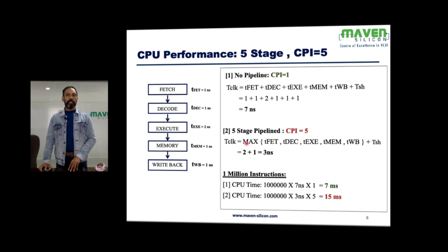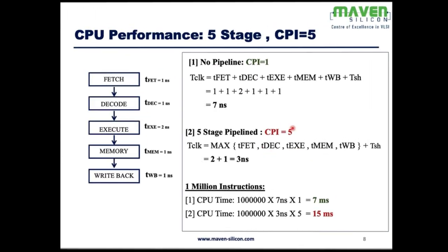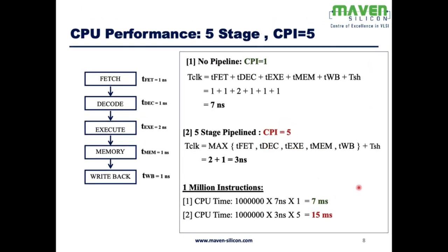For the pipeline, T_clock is the maximum of one stage's delay. The execution stage is maximum at two nanoseconds, plus setup and hold time of one nanosecond, giving three nanoseconds overall. For one million instructions, the no-pipeline processor takes seven milliseconds with CPI of one, but the five-stage pipeline processor takes 15 milliseconds due to CPI of five — which is not good, so we need to reduce CPI to one.